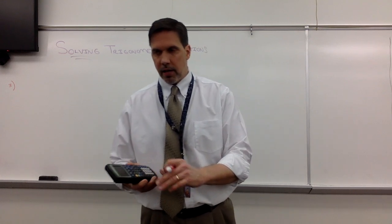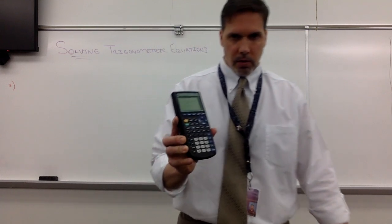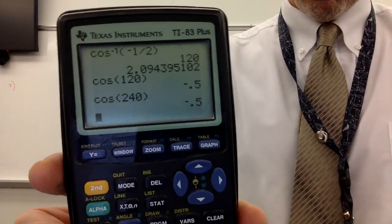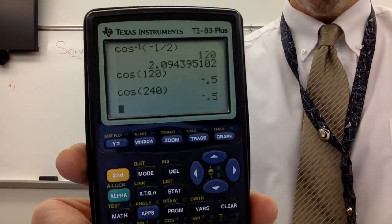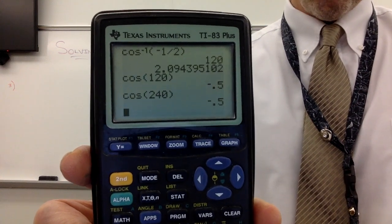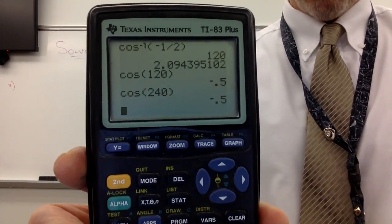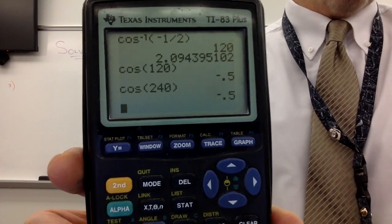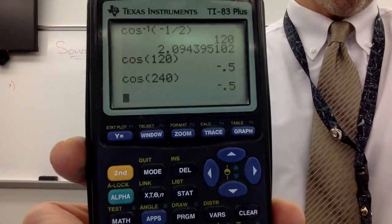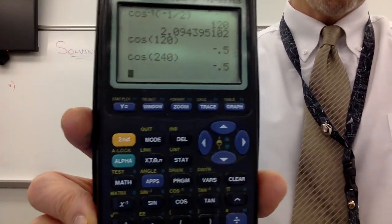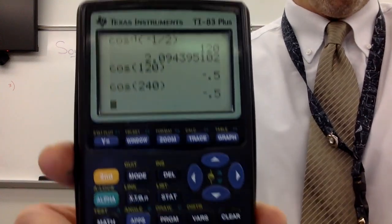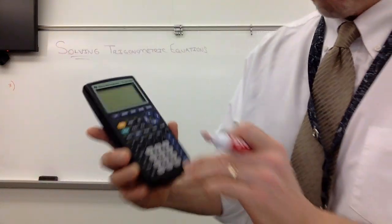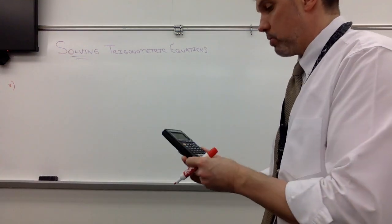What I suggest on that last problem is check these on the calculator. I'm showing you exactly what I'm punching in here. You can see the solutions we got were 120 and 240. You can check those: cosine of 120 and cosine of 240 are both negative 0.5, which means we have solved the equation. We've satisfied cosine of x equals negative one half, which is negative 0.5. Don't be bashful about using your calculator to check your answers.